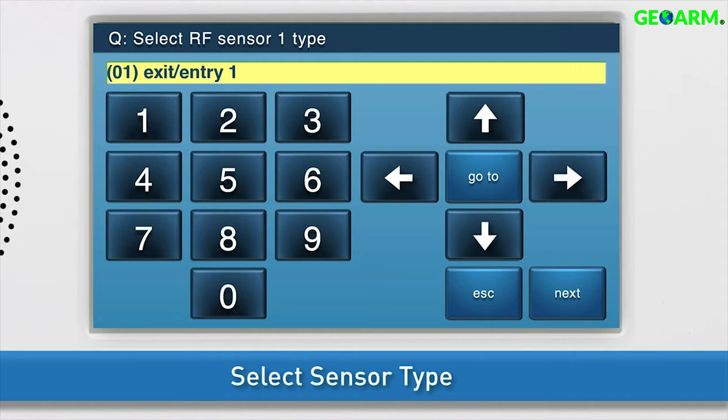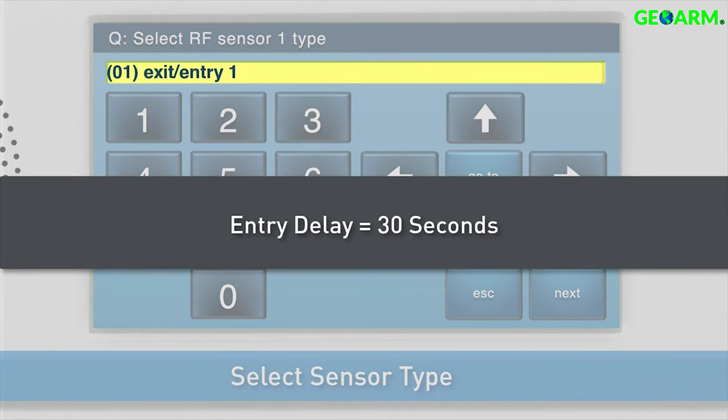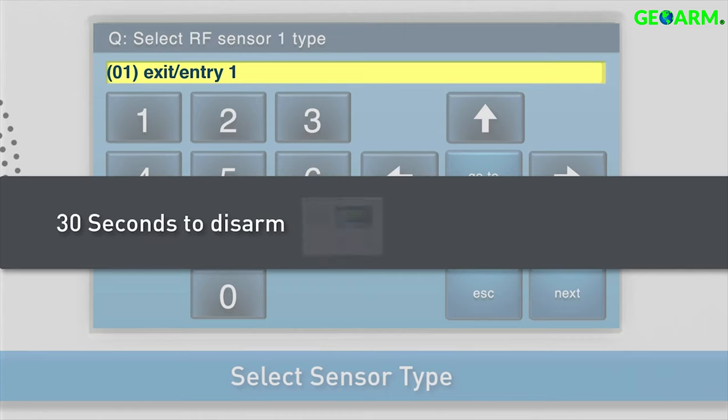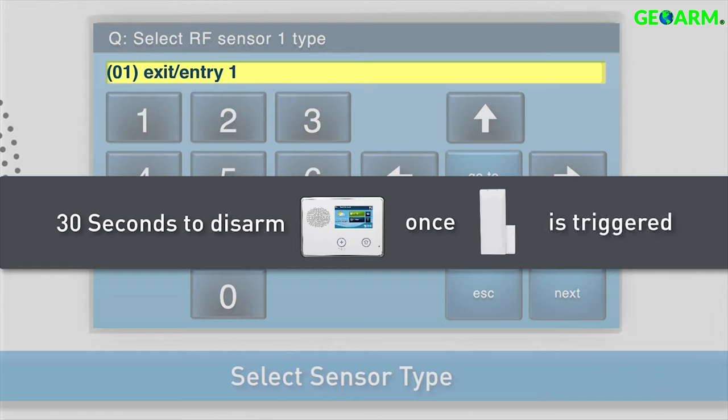The first option, 01, will set an entry delay of 30 seconds. This gives the user a 30-second countdown to disarm the panel once the thin door window contact is triggered while the panel is armed.